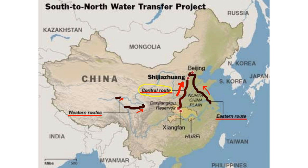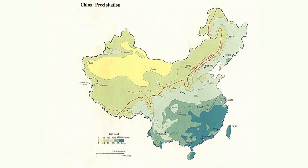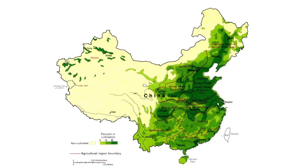The maldistribution of water between a water surplus south and a land agricultural emphasis in the north has upset the balance between water and agriculture, and prompted the Chinese to undertake major construction projects to control the surplus of water in the south and to provide additional water to the north. This will remain one of the big issues in Chinese politics and economics now and in the future.